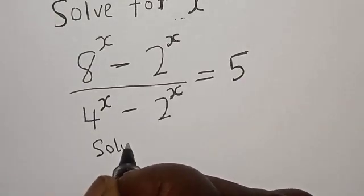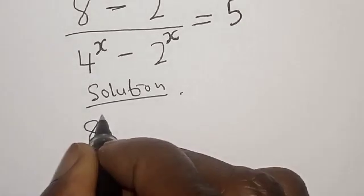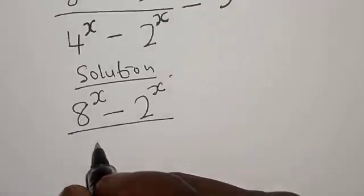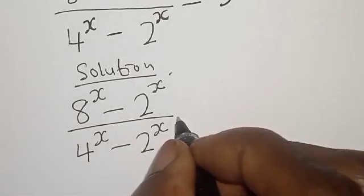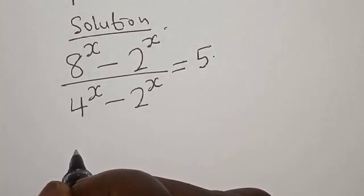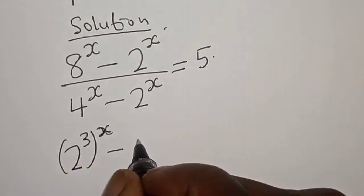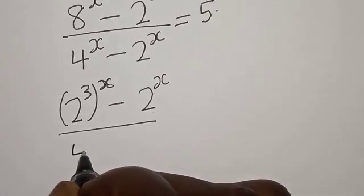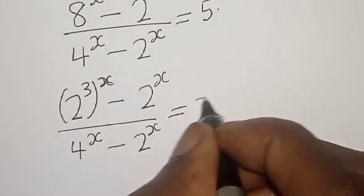Solution. We have the given equation: 8 raised to power x minus 2 raised to power x, divided by 4 raised to power x minus 2 raised to power x, is equal to 5. Then 8 raised to power x can be expressed as 2 raised to power 3x, giving us 2 raised to power 3x minus 2 raised to power x, divided by 4 raised to power x minus 2 raised to power x, is equal to 5.